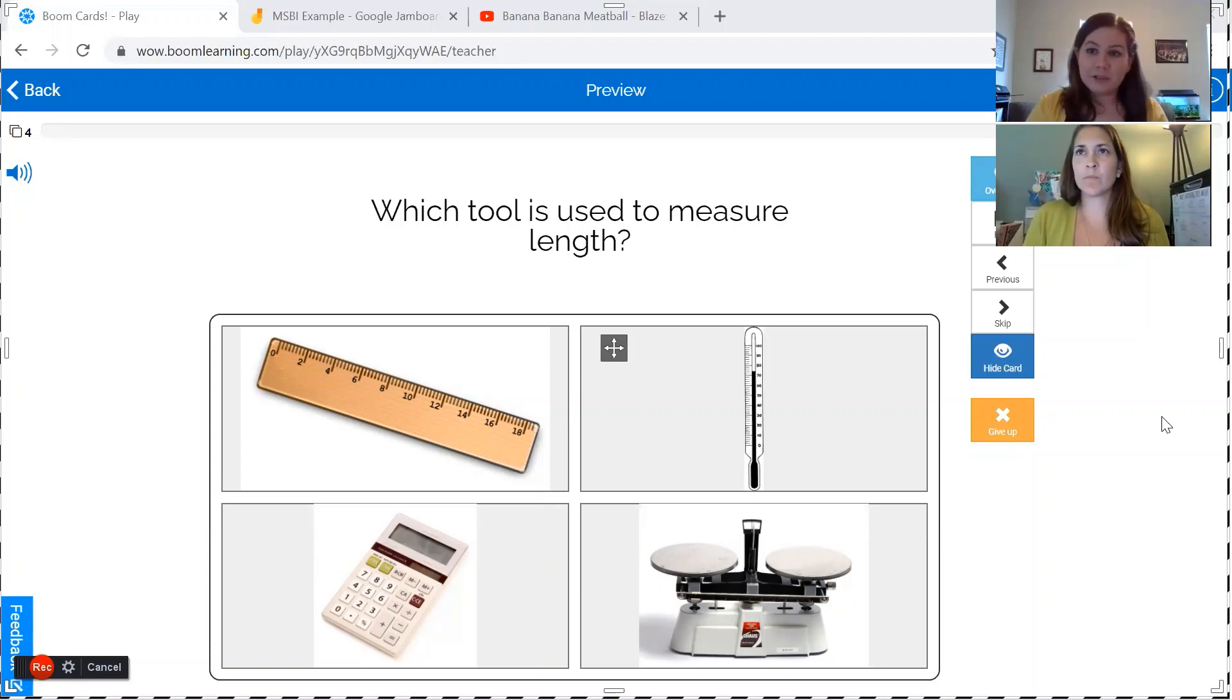Once Melissa makes 100% accuracy over three consecutive sessions in her zero second, we'll move on to three second delay. In this part of constant time delay, Melissa will have three seconds to select the correct answer after I read the question. If she does not answer within three seconds, I'll prompt her the same way as zero seconds. If she makes an error, Boom Cards has this great feature where they will cross out the incorrect answer, reducing the field to three. Then I will prompt her by hovering over the correct answer. All right, Melissa, are you ready?